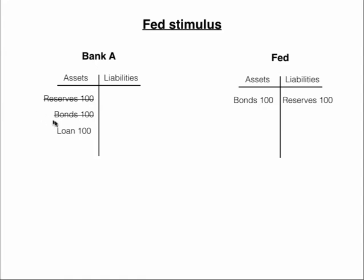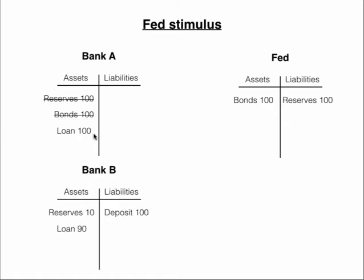The first loan this bank can make is the full amount of $100. That might end up as a deposit in some other bank or even the same bank. As we've already seen, we hold 10% in reserve, lend out the rest, and keep going. We get the whole money multiplier process.